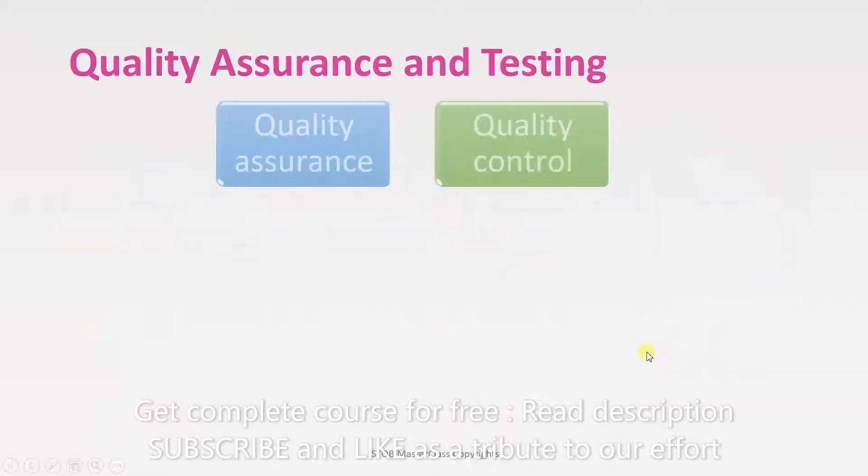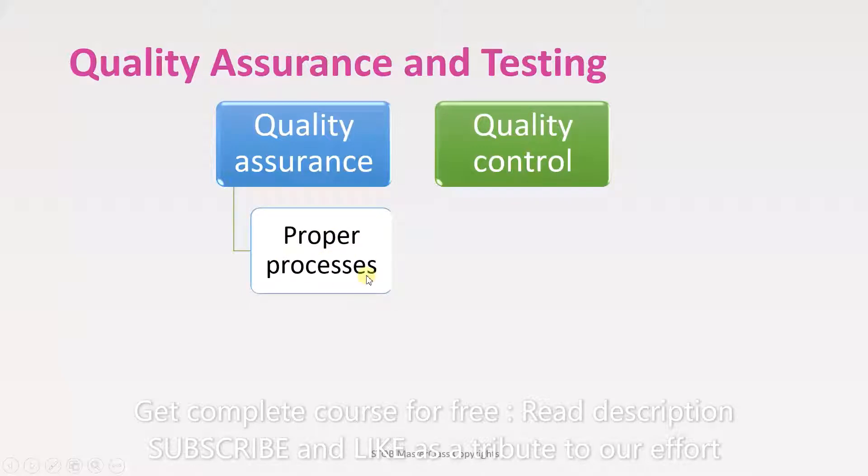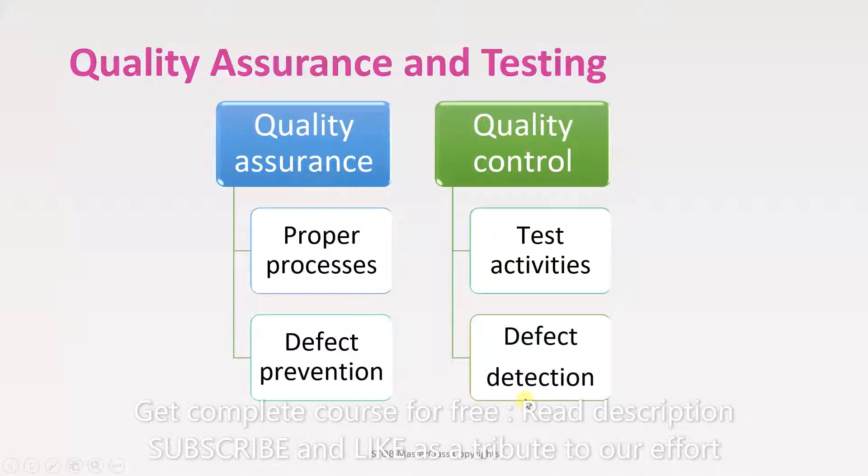Now let's look into these two concepts a little more: quality assurance and quality control. Quality assurance contains proper processes, while quality control has test activities. Quality control is practical, whereas quality assurance is theoretical. The next point to look at is quality assurance is more about defect prevention. By laying out guidelines in documents, this helps prevent defects. But quality control is a defect detection mechanism.